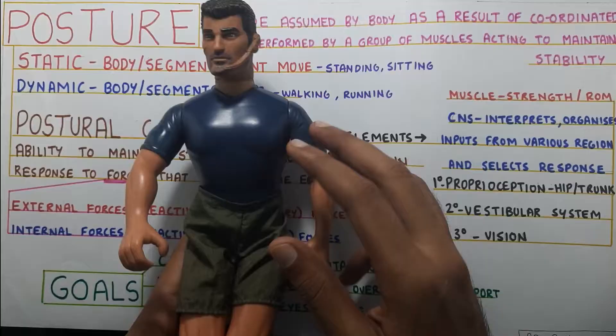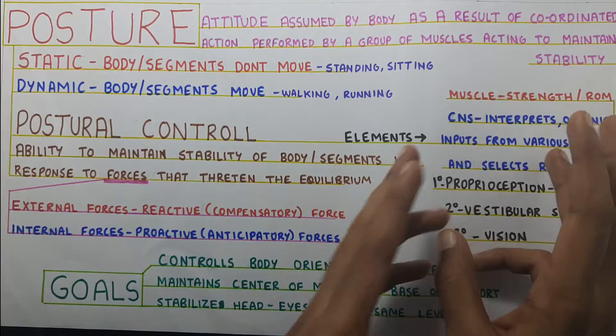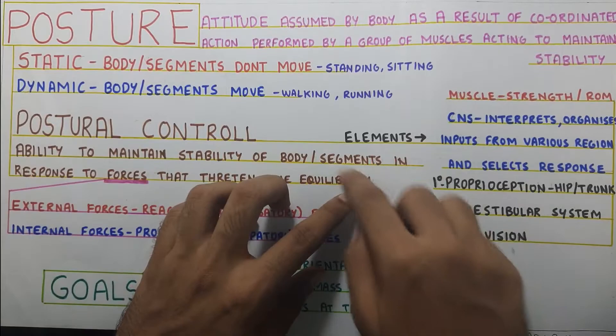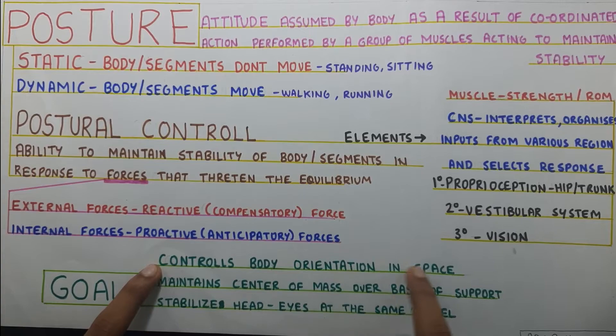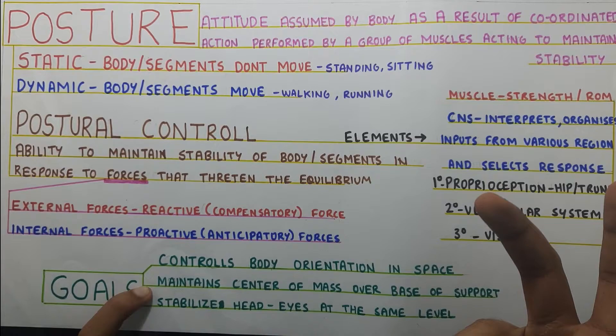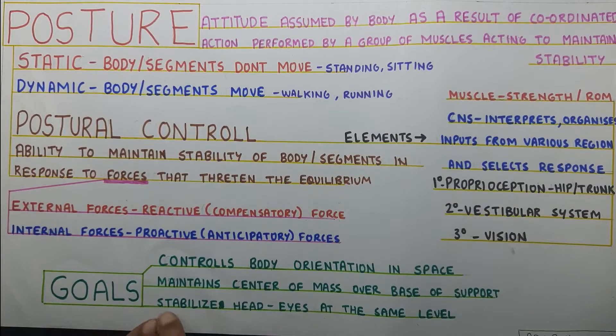What is the goal of postural control? Through all these elements — muscle function, CNS, proprioception, vestibular system, and vision — it achieves three goals. First, it controls the body orientation in space. Second, it maintains the center of mass over the base of support, which is stability. Third, it stabilizes the head by keeping the eyes at the same level through vision.